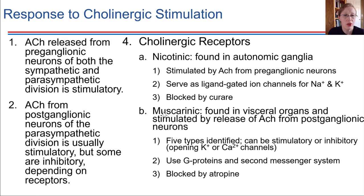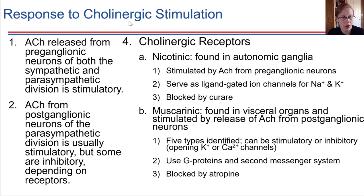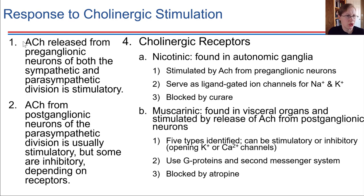Receptors for acetylcholine are a little more straightforward, at least to start. Cholinergic receptors — the name refers to the fact that the receptor can recognize acetylcholine. When acetylcholine is released from the preganglionic neuron, that's always going to have an excitatory or stimulatory effect on the postganglionic neuron. That's just a general rule.